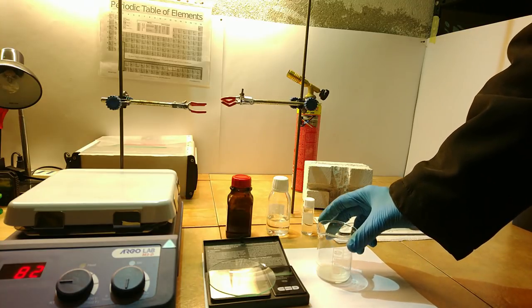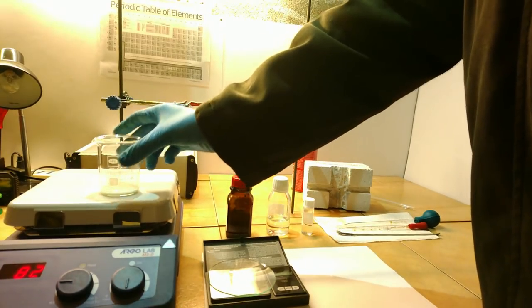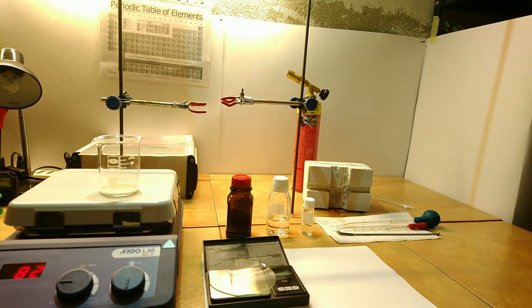After adding everything and stirring, put the beaker on a hot plate at low heat until all the water has evaporated. While the water evaporates, let's talk a bit about the next step. We need to fire the dry powder that we are making in a tube furnace at over 1000 degrees under inert atmosphere.